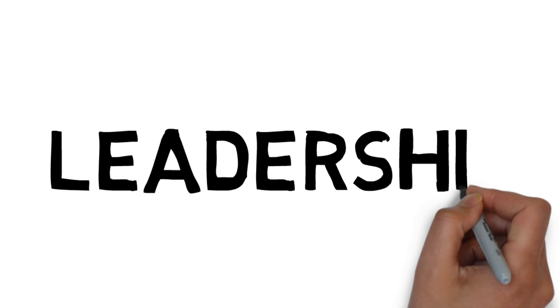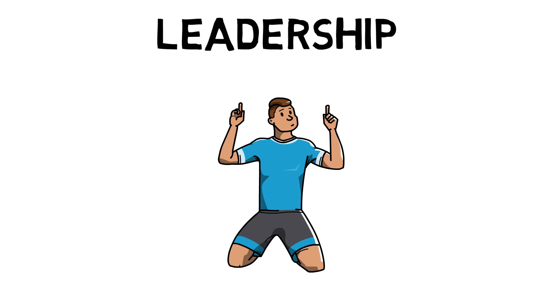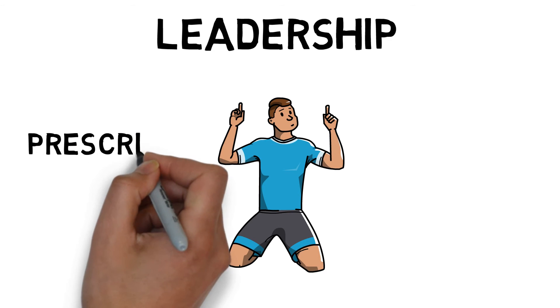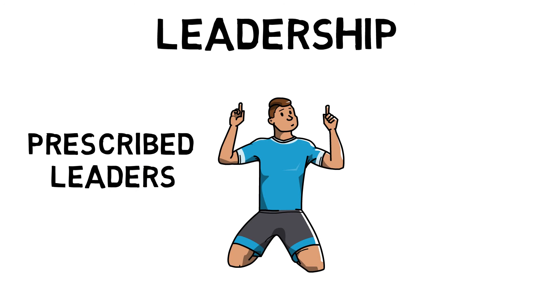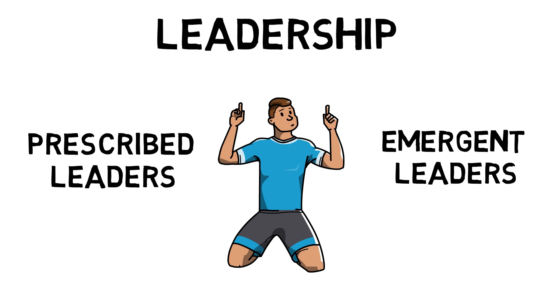Leadership is the behaviour of an individual when they are directing or influencing the activities of others towards a shared goal. Selection of leaders can be one of two ways. Prescribed leaders are appointed by someone in authority and imposed onto a group; they are likely to be highly qualified, skilled and motivated, but may be unfamiliar with the team and under severe pressure to perform. Emergent leaders emerge from within a group and take charge with the support of their teammates. They achieve their status through respect, familiarity and recognisable leadership skills; however, they may lack experience and cause resentment from within the group.